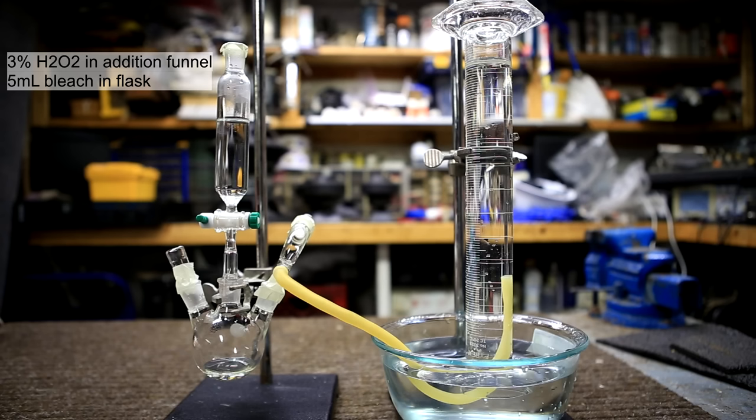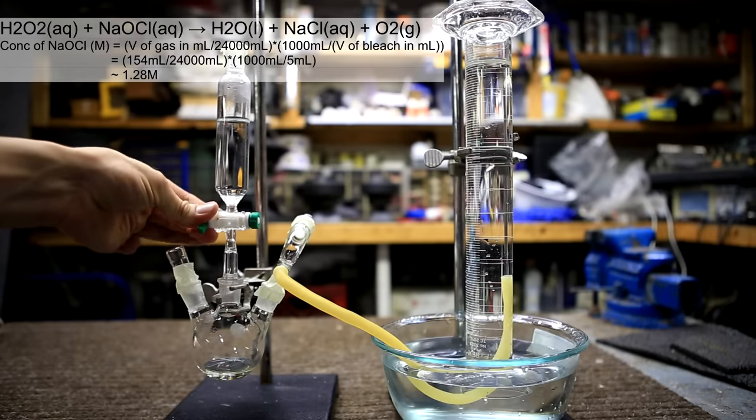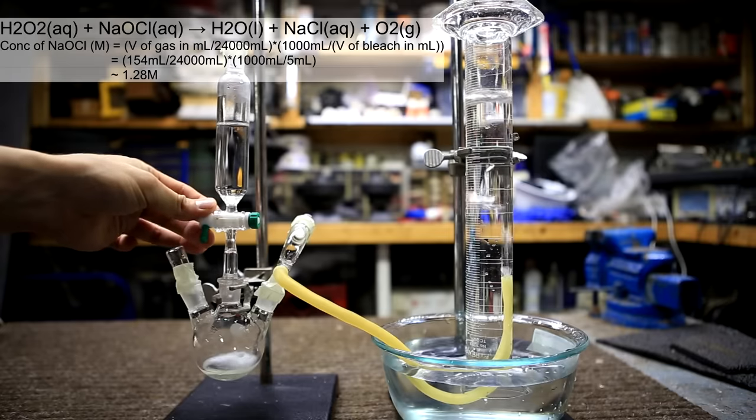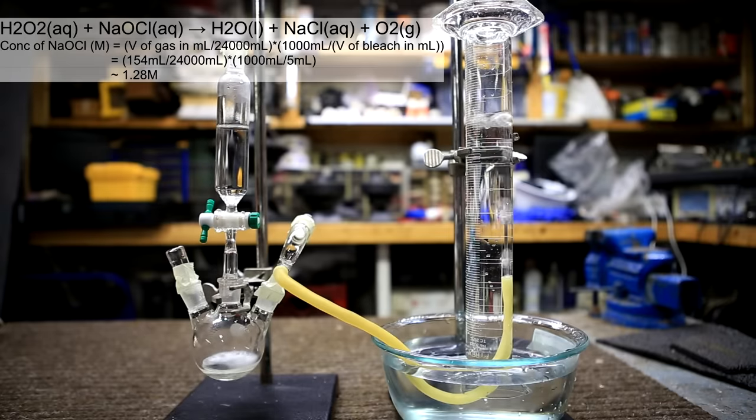The first thing that must be done is to determine the concentration of sodium hypochlorite in the bleach. This is done by reacting about 5 milliliters of bleach with 3% hydrogen peroxide. As shown in the equation above, the hydrogen peroxide reacts with the sodium hypochlorite to form water, sodium chloride, and oxygen gas.